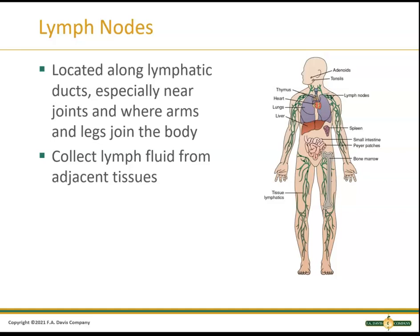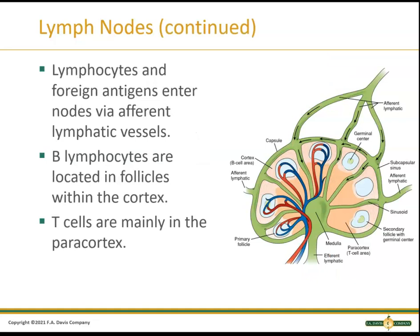Lymph nodes are found near all the joints — where arms and legs attach to the body — and they collect lymph fluid from adjacent tissues. They're key indicators of inflammatory or invasive processes. B cells are located in the follicles within the cortex of the lymph node, where initial contact with antigens occurs to start antibody production. T cells are mainly located in the paracortex. When we check lymph nodes in the neck for infection or check them in cancer patients, that's why they're so important.